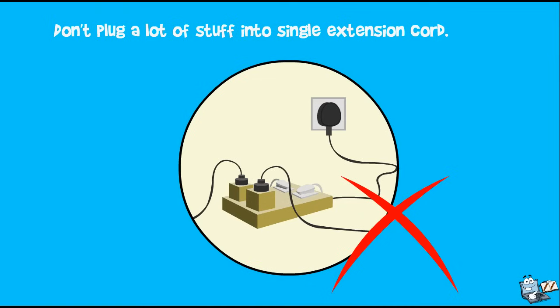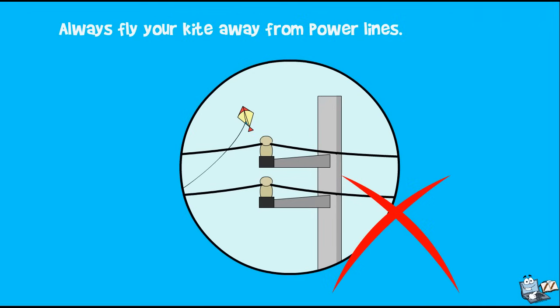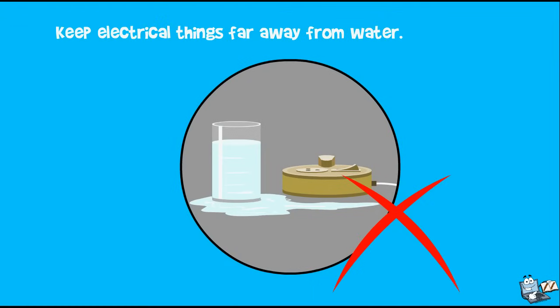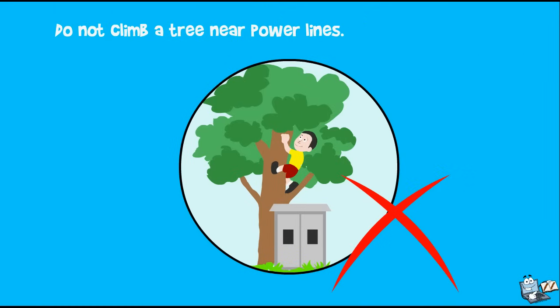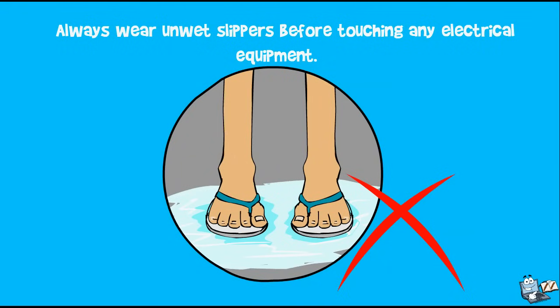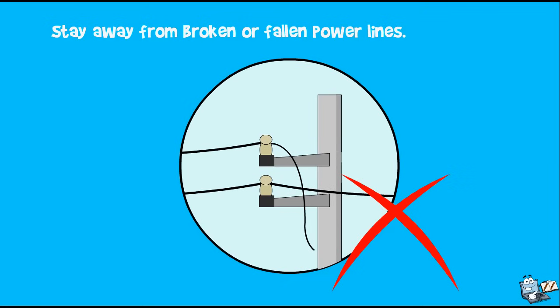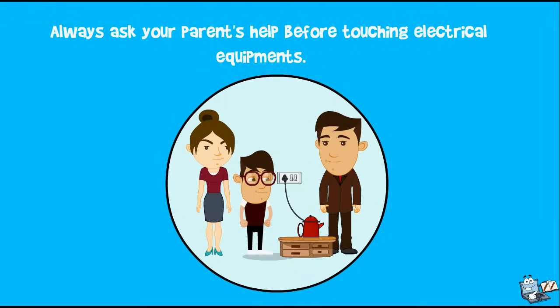Don't plug a lot of stuff into a single extension cord. Always fly your kite away from power lines. Keep electrical things far away from water. Do not climb a tree near power lines. Always wear dry slippers before touching any electrical equipment. Stay away from broken or fallen power lines. Always ask your parents' help before touching electrical equipment.